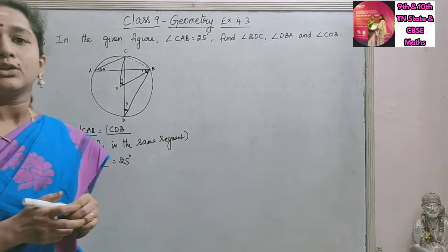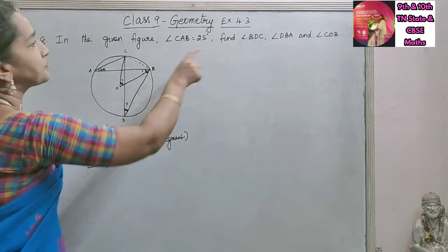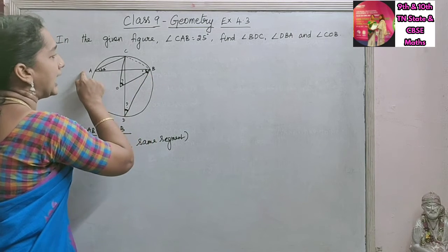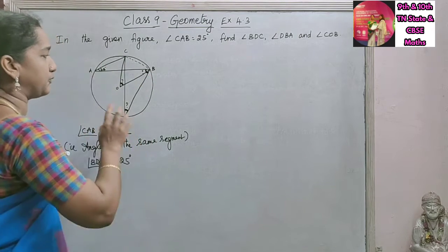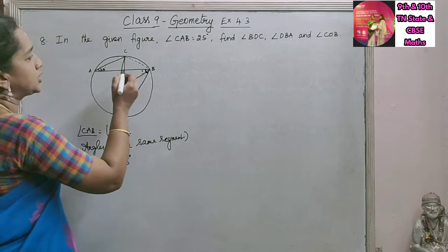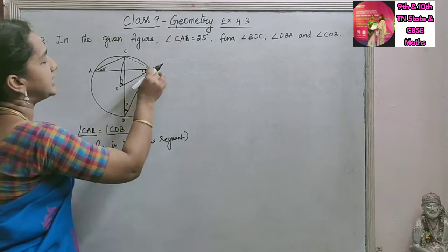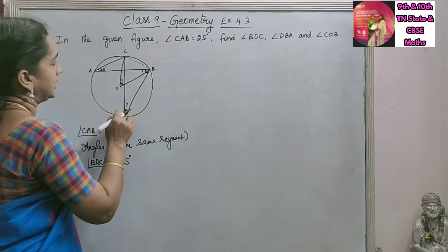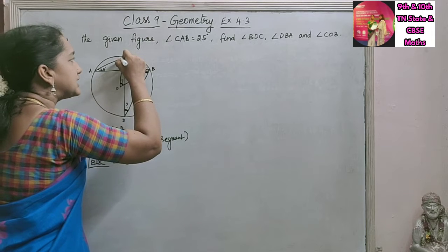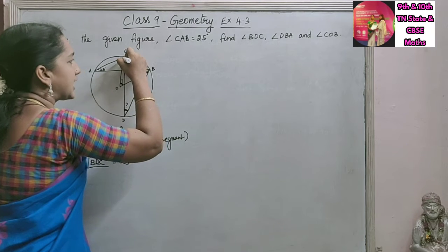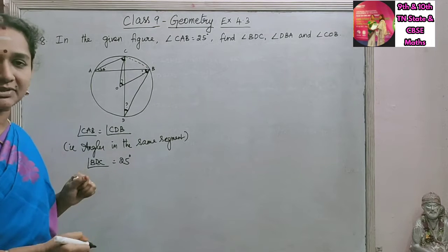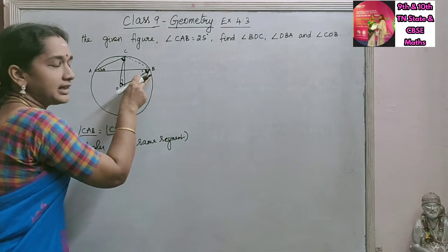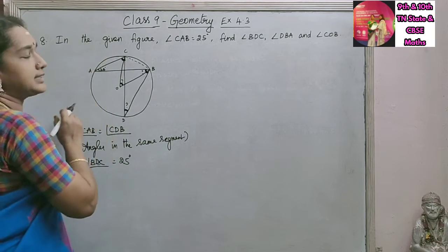Angle BDC is 25 degrees — that is the first angle we found. Next is angle DBA. If we take angle DBA, angle DBA and angle DCA will be angles in the same segment. So if we find the measure of angle DCA, we can say that angle DBA is also equal to that.